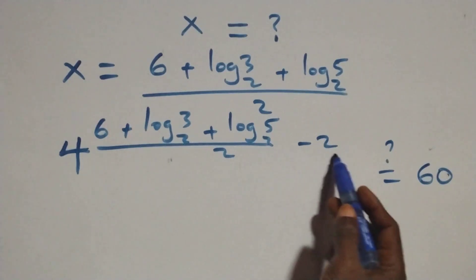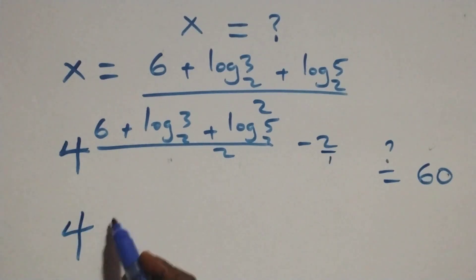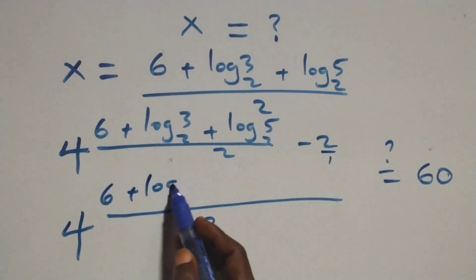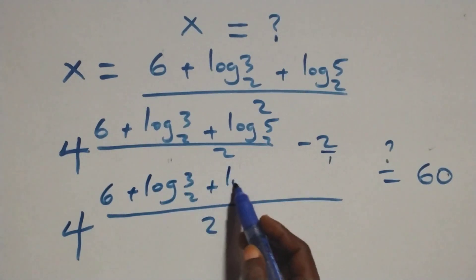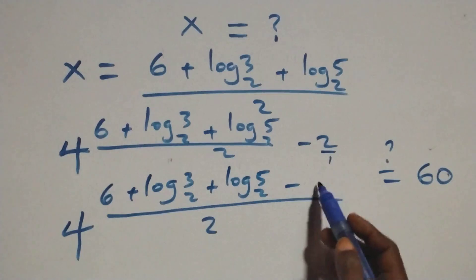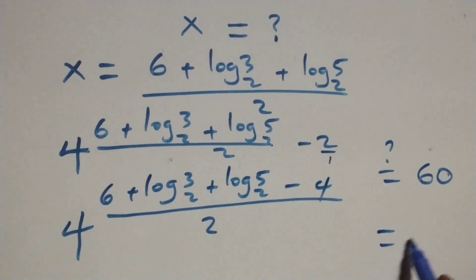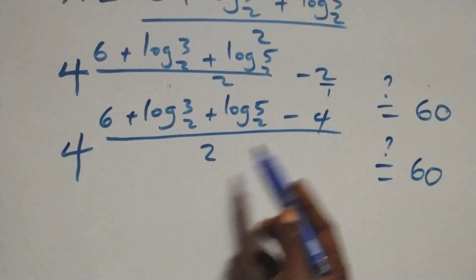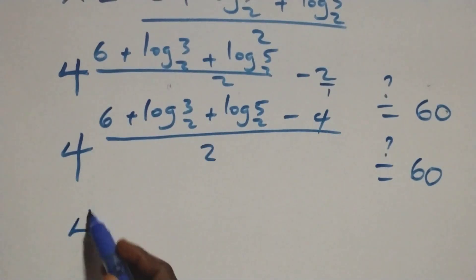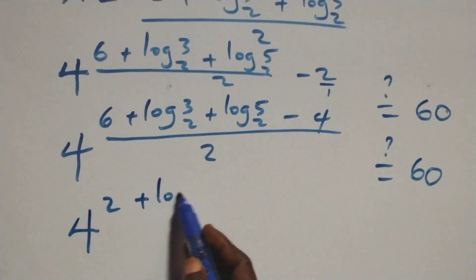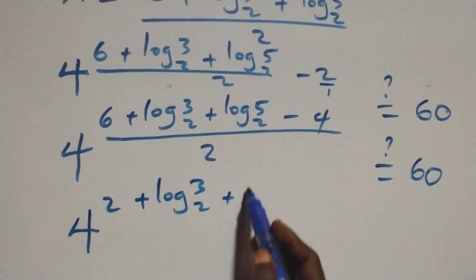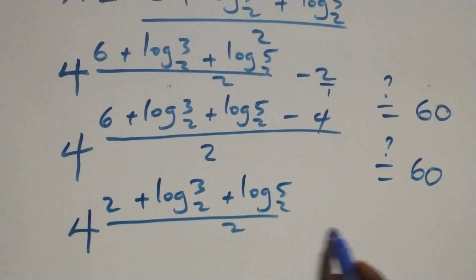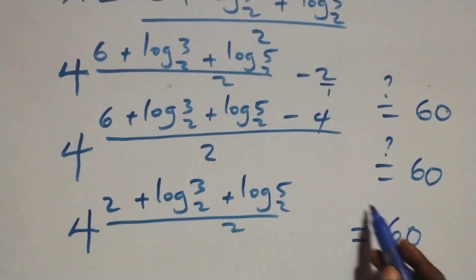We bring this power together: the denominator two over one. We have four raised to power: six plus log three base two plus log five base two, all divided by two, minus four, equals sixty. Then six minus four gives two, so we have four raised to power: two plus log three base two plus log five base two, all over two, equals sixty.